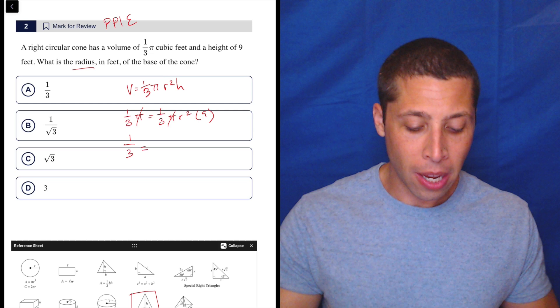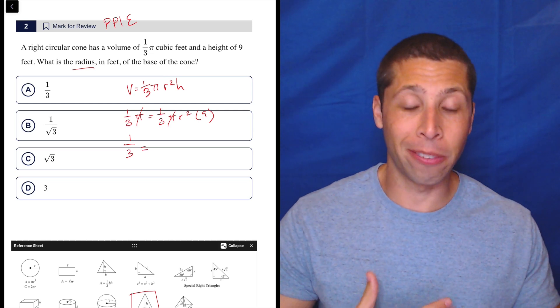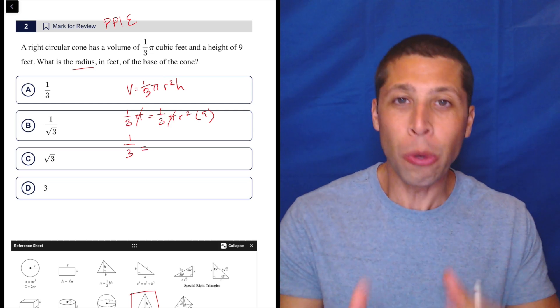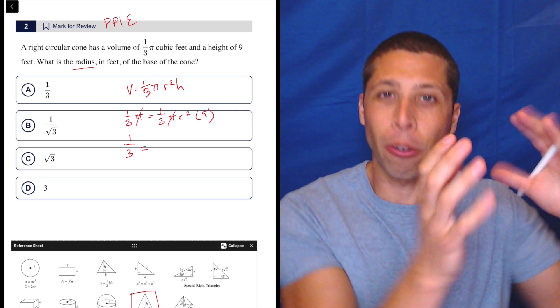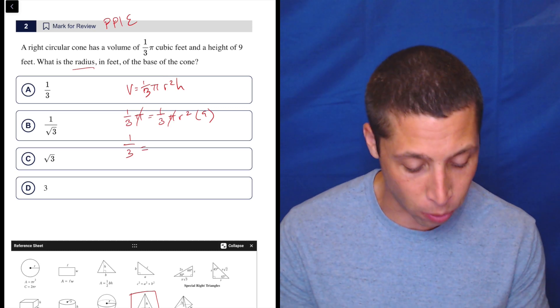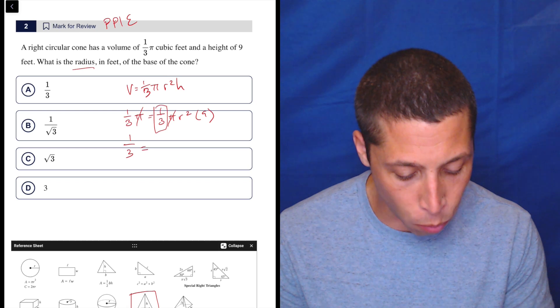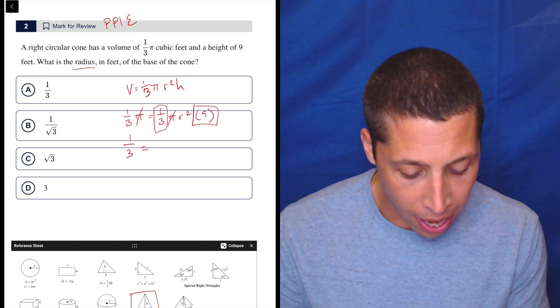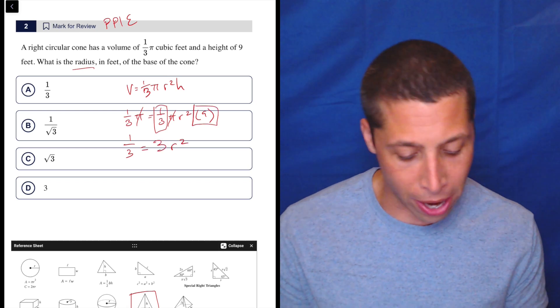A better thing to do when you have algebra to do, you should usually do arithmetic first. Take care of one side and clean that side up rather than moving things across when you haven't simplified one side. So we can take the one third of nine, and that's three r squared.